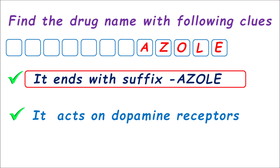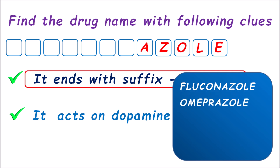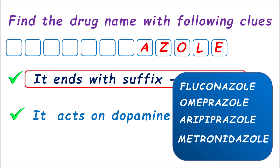What are the drugs having the suffix -azole? The first category is azole antifungals — fluconazole is one example. We also have omeprazole, a proton pump inhibitor with the similar suffix -azole. Similarly, we can identify aripiprazole, where we find the suffix -azole again. Finally, metronidazole and tinidazole are anti-amoebic drugs with a similar suffix -azole.